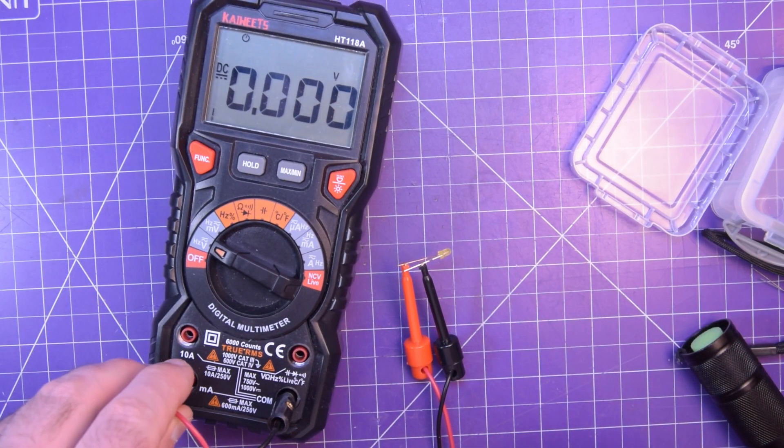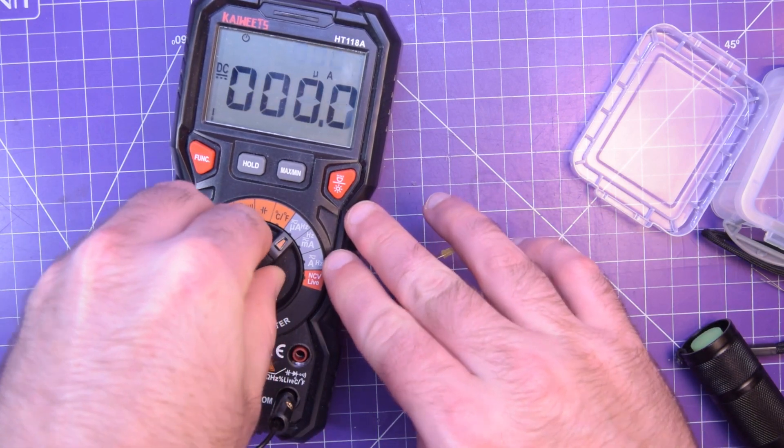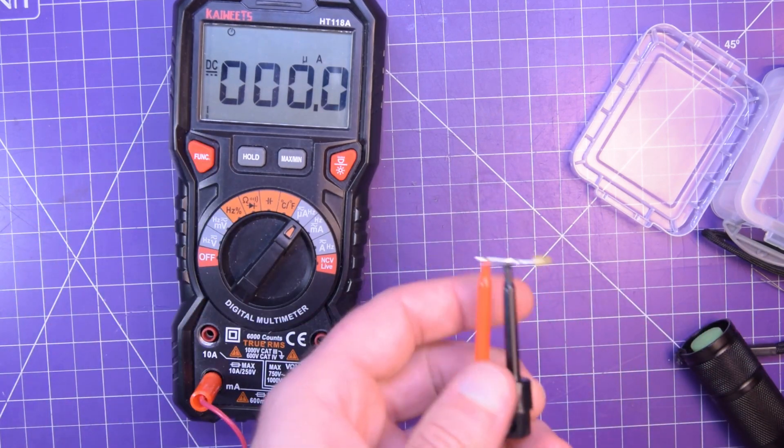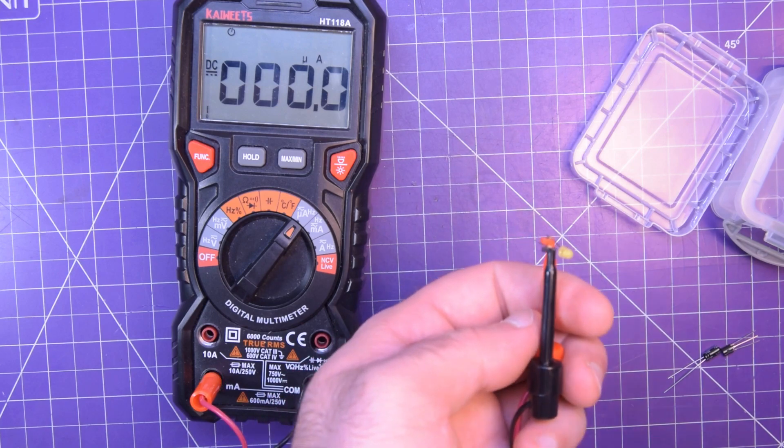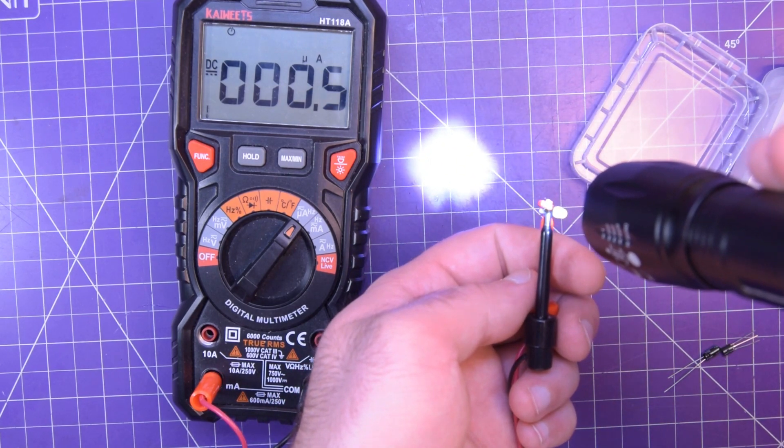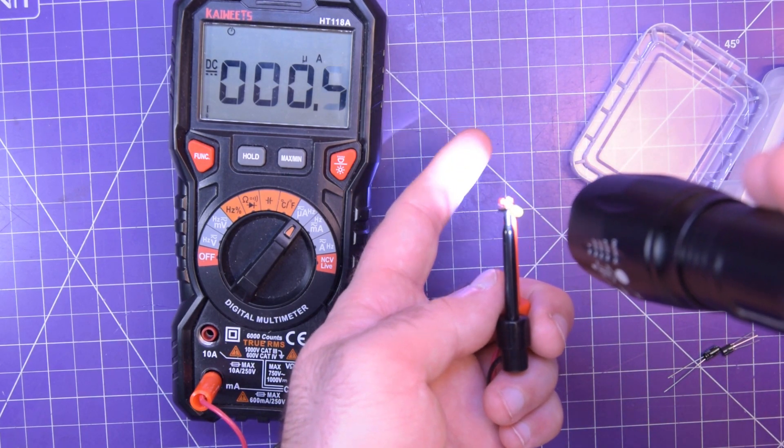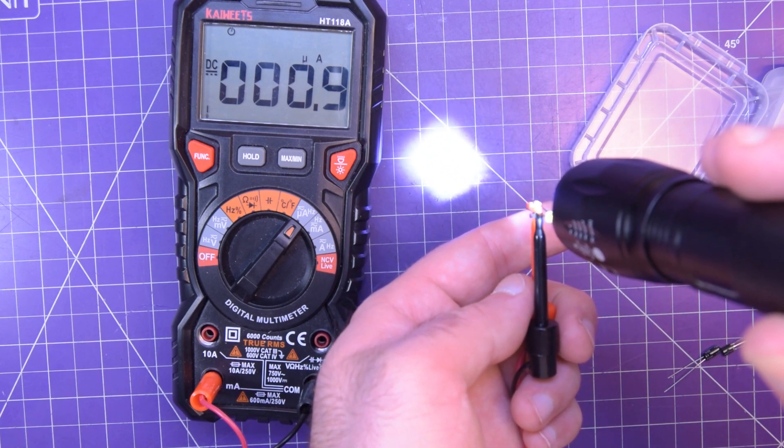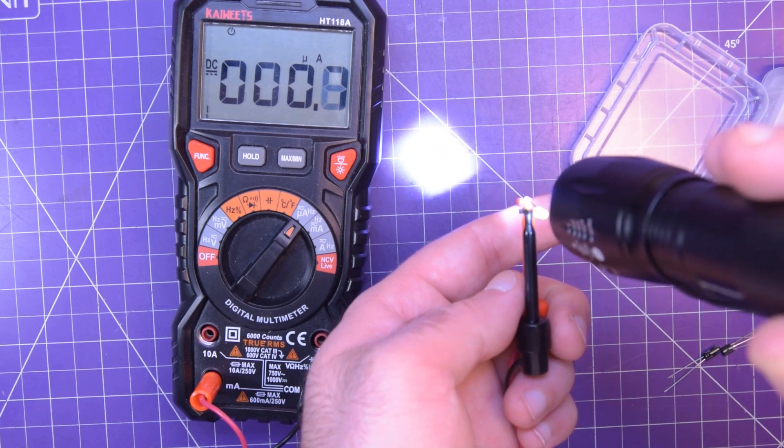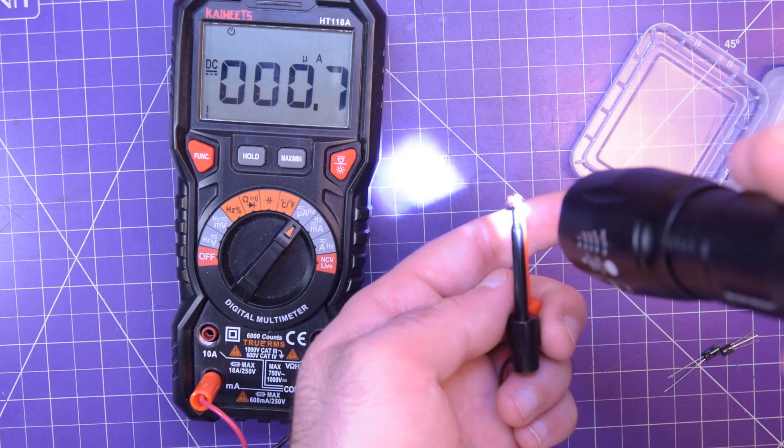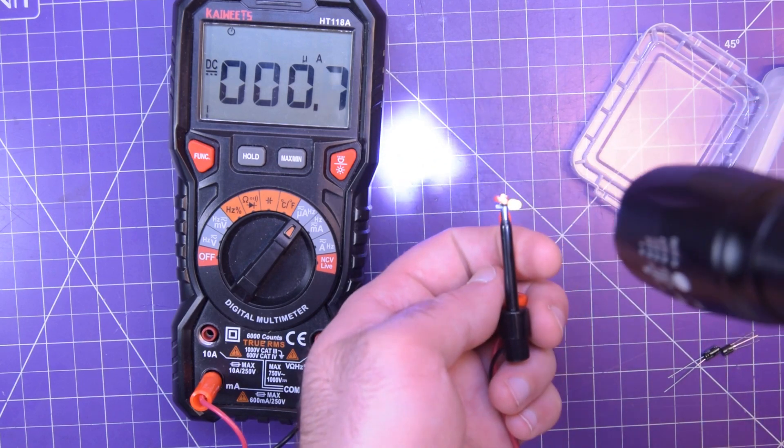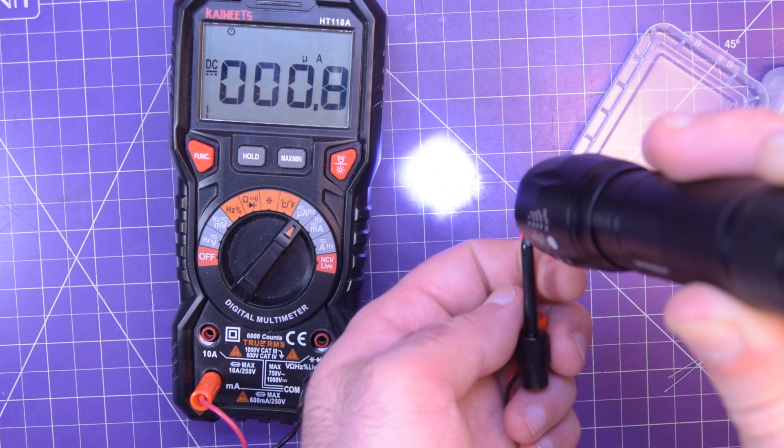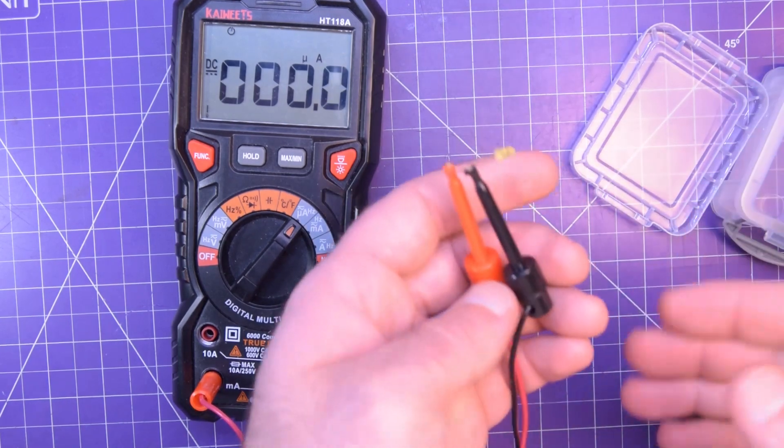In fact, I don't really know how much current. It's like very little. So let's see here. Micro amps. Yeah, like almost one micro amp. It's a tiny, tiny amount of current. Like absolutely nothing for current. But it does work in reverse.